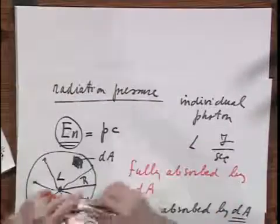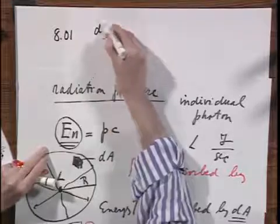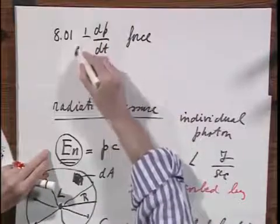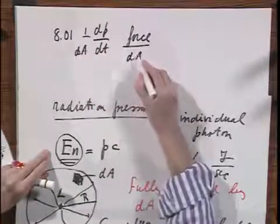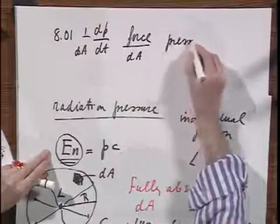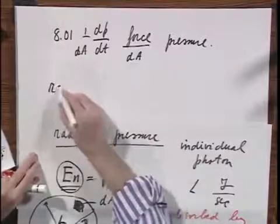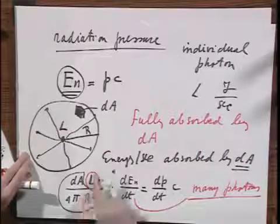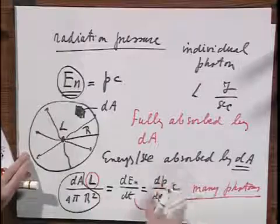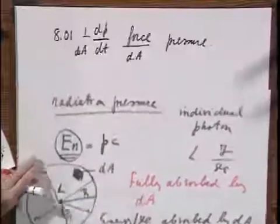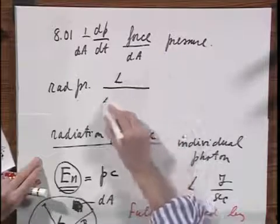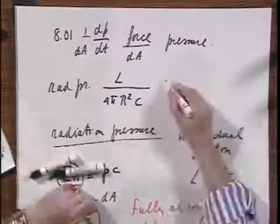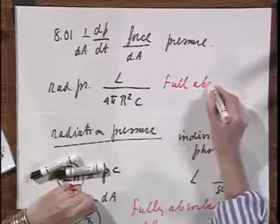And if we go back to 801, you remember that dP/dt is a force. And if I take the force and I divide that by the area dA, then I get a pressure. And so you see here for the first time that the radiation pressure is simply this quantity divided by dA. And I have to bring the C here because it is 1 over dA times dP/dt. And so the radiation pressure equals L divided by 4πr² divided by C.